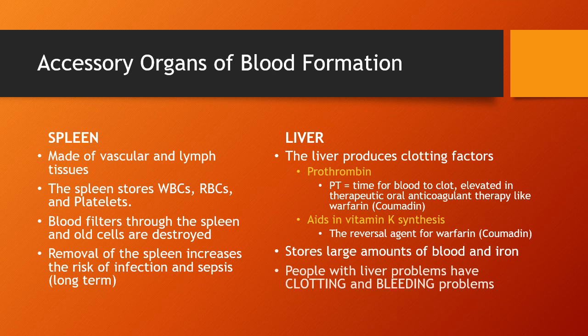The liver is also a highly vascular organ, responsible for the creation and storage of many clotting factors. Specifically, prothrombin is one we're interested in, as well as the synthesis of vitamin K, because prothrombin is part of the clotting cascade that coumadin specifically blocks, and vitamin K is the reversal agent for coumadin. Prothrombin time is the blood test we use to see how well blood is clotting, especially if on an oral anticoagulant, and vitamin K is the reversal if over-anticoagulated with oral anticoagulants like coumadin or warfarin.